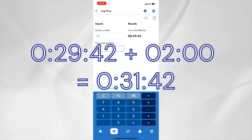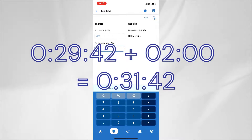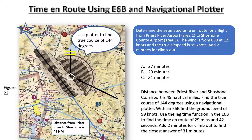Then add the climb-out time of 2 minutes to find the total time en route of 31 minutes and 42 seconds. The correct answer for this problem is therefore C - 31 minutes, since that is the closest answer to the exact flight time of 31 minutes and 42 seconds.